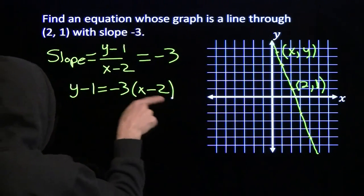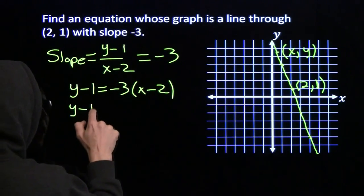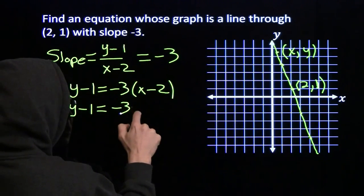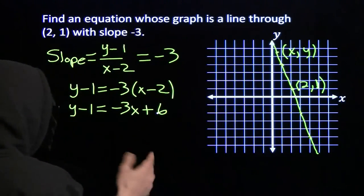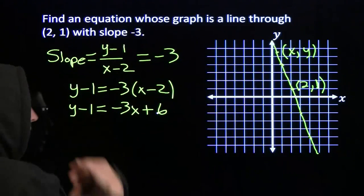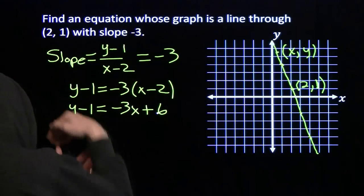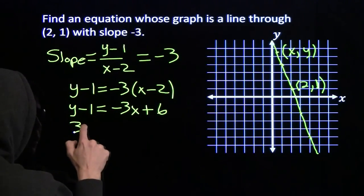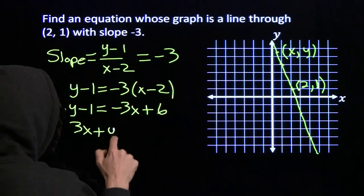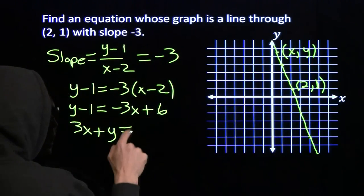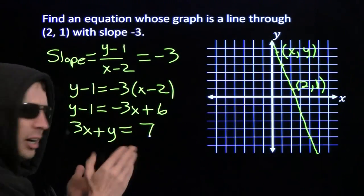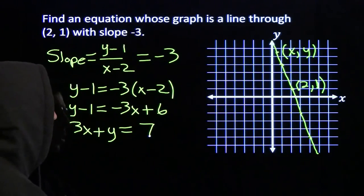Now we can clean this up a little bit. I'm going to multiply out the right-hand side. -3 times x minus 3 times -2 gives us 6. Clean this up a little bit more. I like all my variables on the same side. I'm going to bring the 3x over here. Added 3x to both sides. I'm also going to add 1 to both sides. Get all my constants over there. That's a nice, clean, simple equation.